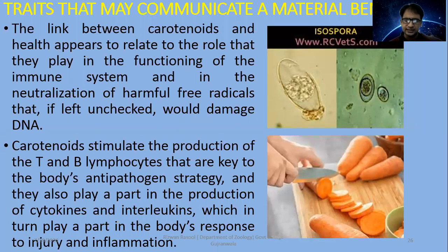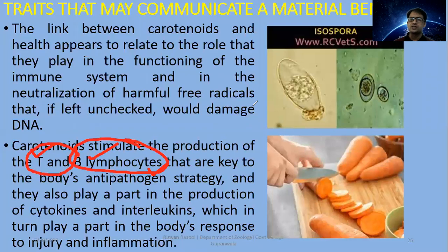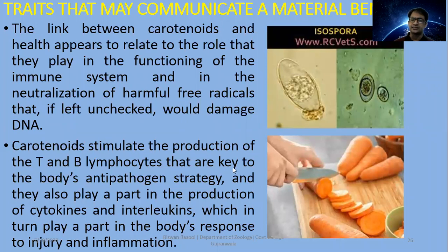Carotenoids also stimulate production of B and T cells. These B and T lymphocytes are the body's basic anti-pathogen components. T cells act through cell-mediated response, performing direct killing, while B lymphocytes act through the production of plasma clone cells and antibodies as part of the acquired immune response. Additionally, cytokines, lymphokines, and interleukins can activate other types of white blood cells and macrophages.